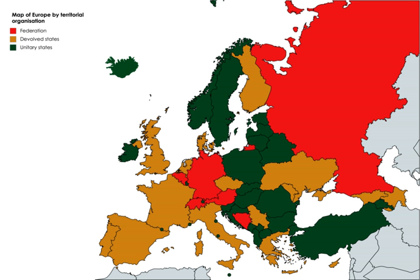Those uncomfortable using the 'F word' in the EU context should feel free to refer to it as a quasi-federal or federal-like system. Nevertheless, for the purposes of analysis, the EU has the necessary attributes of a federal system. It is striking that while many scholars of the EU continue to resist analysing it as a federation, most contemporary students of federalism view the EU as a federal system.